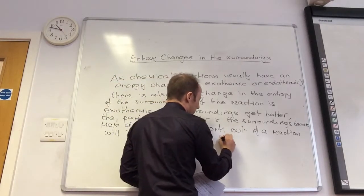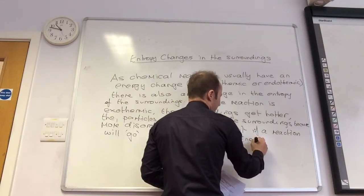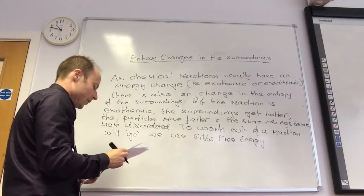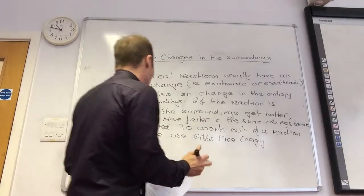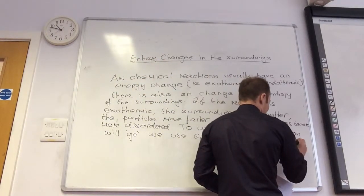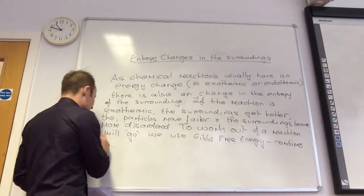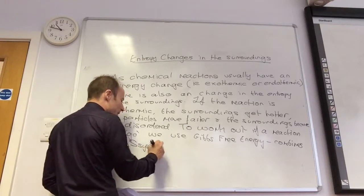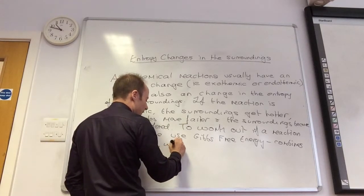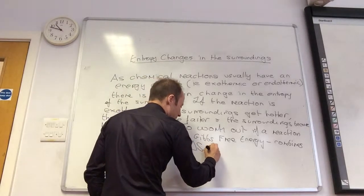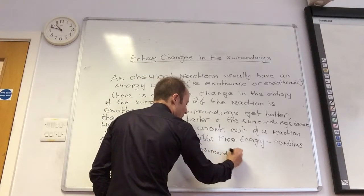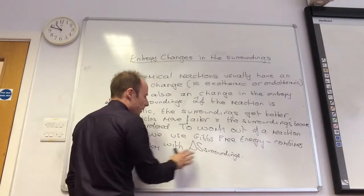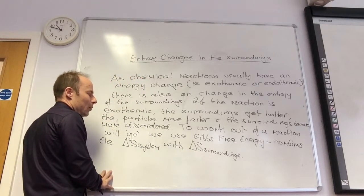Now, this is an OCR thing. I don't like it, but we're stuck with it — there are better ways of doing it, but OCR wants to use Gibbs free energy, and therefore we will. Gibbs free energy combines the entropy change — so it combines delta S system, the entropy change of the system, with delta S surroundings, the entropy change of the surroundings, to give us one value. It allows us to balance these two against each other to work it out.